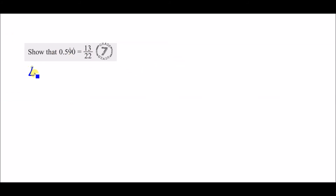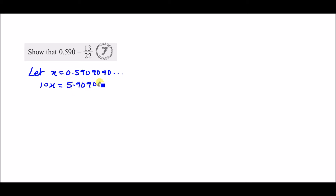Part C: show that 0.590 recurring equals 13 over 22. Let x = 0.590909... and keep recurring it. Multiply the equation by 10: 10x = 5.90909... The decimal digits aren't repeating in position yet, so multiply by another 10: 100x = 59.09090909...